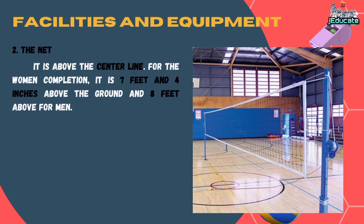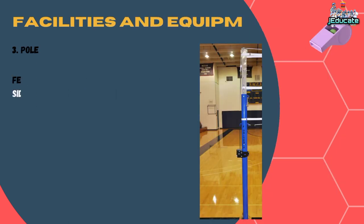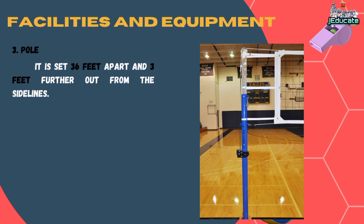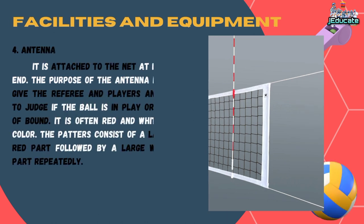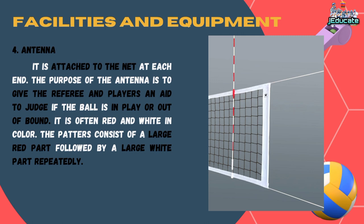Number 2, The Net. It is above the center line. For women's competition it is 7 feet and 4 inches above the ground, and 8 feet above for men. Number 3, Pole. It is set 36 feet apart and 3 feet further out from the sidelines. Number 4, Antenna. It is attached to the net at each end. The purpose of the antenna is to give the referee and players an aid to judge if the ball is in play or out of bounds. It is often red and white in color, with large red and white parts alternating repeatedly.